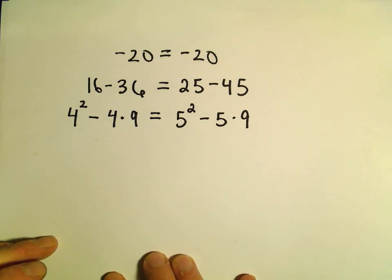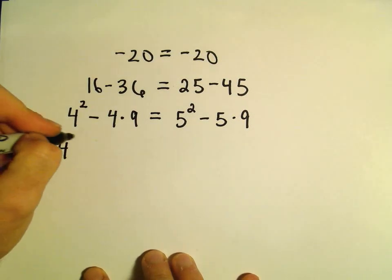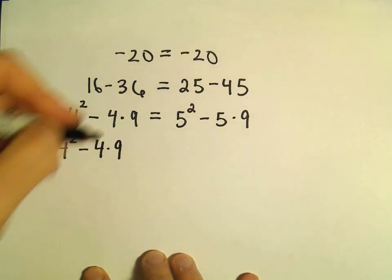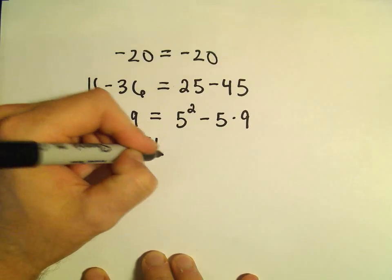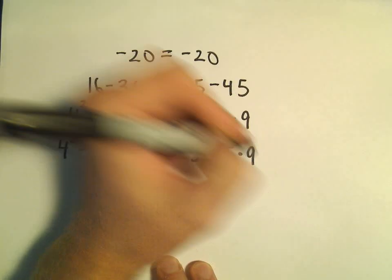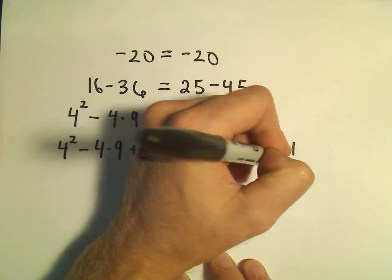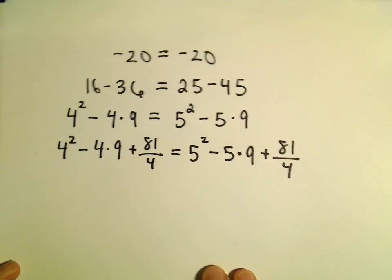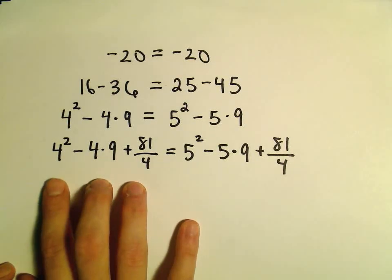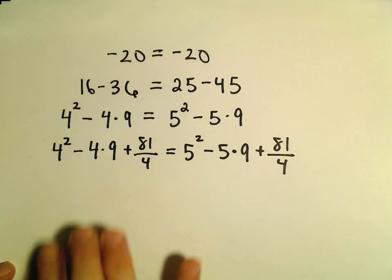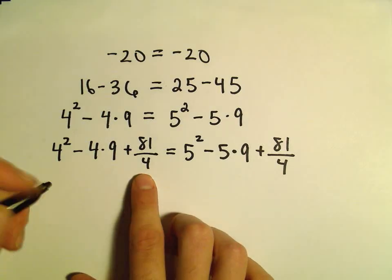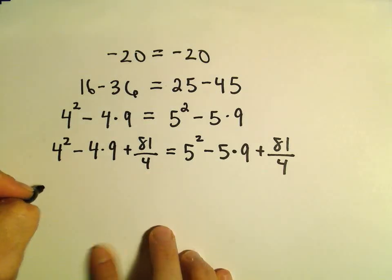Now I'm going to add to both sides. The number I'm going to add is 81 over 4. So that's what we've got so far. Actually, I think we can factor this now. You can check that this all works.